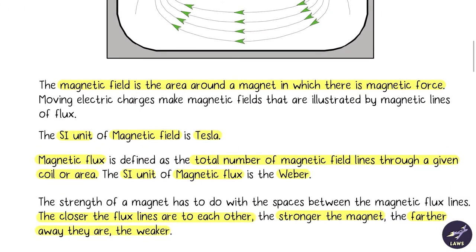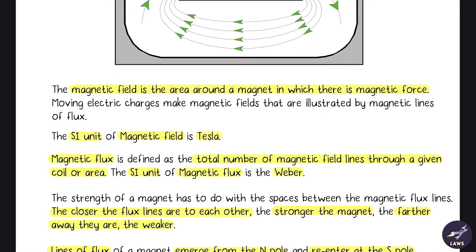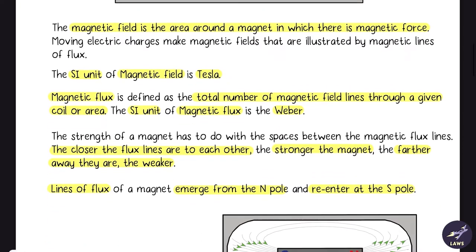The SI unit of magnetic field is tesla. Magnetic flux is the magnetic field in a given area. The unit of magnetic flux is weber. All these units you have to remember in case they ask in the exam.